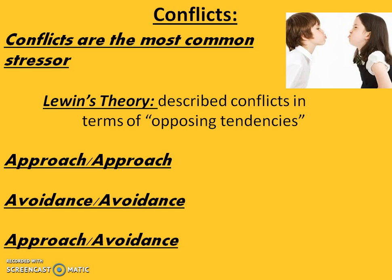Let's start with approach-approach conflict. This occurs when a person is simultaneously attracted to two appealing goals — a student accepted to two equally desirable colleges, a job seeker offered two equally exciting and high-paying positions, or a person who finds two equally attractive apartments. There are really numerous examples of this.